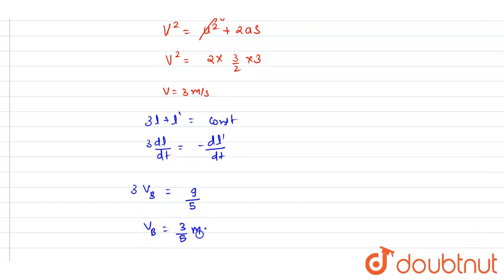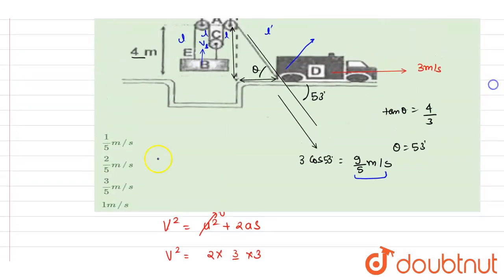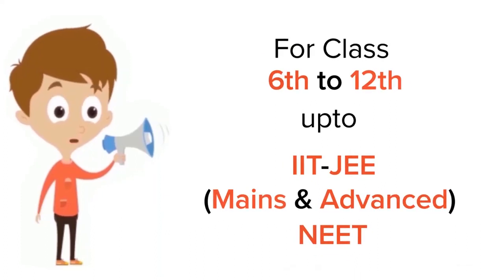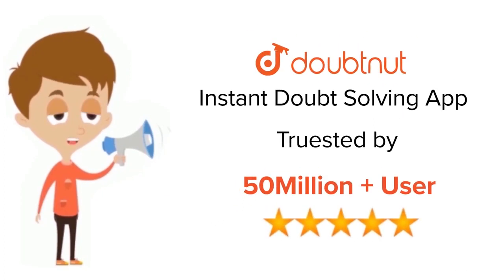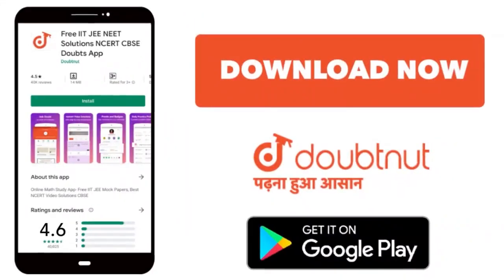From here you will get vB equals to 3/5 meter per second and this is the answer. Now you can check for the option 3/5, C is the correct. Thank you for class 6-12, IIT and NEET level, trusted by more than 5 crore students. Download Doubtnet app today.